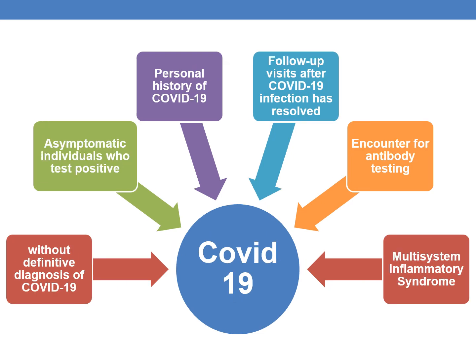We will be discussing what must be coded without a definitive COVID-19 diagnosis, the code for asymptomatic individuals who test positive for COVID, the code for personal history of COVID-19, the coding guidelines related to follow-up visits after COVID-19 infection has resolved, the code for encounter for antibody screening, and the multi-system inflammatory syndrome which occurs due to COVID.